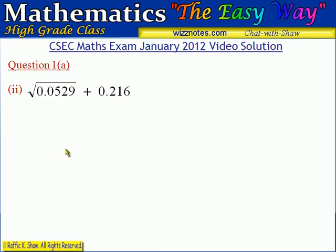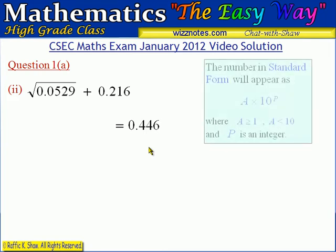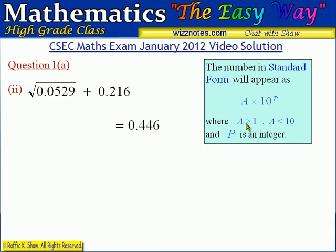Let's move to part 2 of question 1A. Part 2 gives us an expression to find the exact value and express it in standard form. Using a calculator to work out this expression gives us 0.446. Now we need to express this in standard form. The rule for standard form is that the number appears as a × 10^p, where a is greater than or equal to 1 but less than 10, and p is an integer.